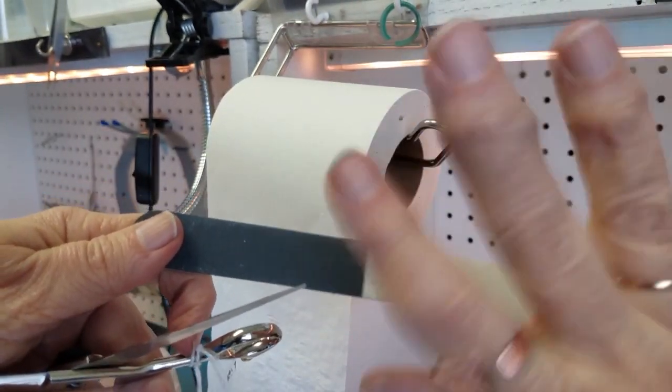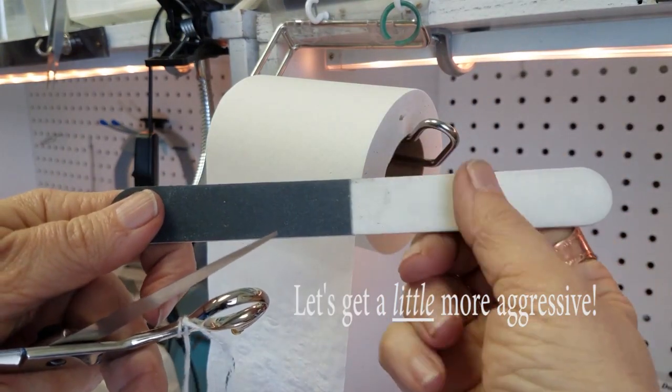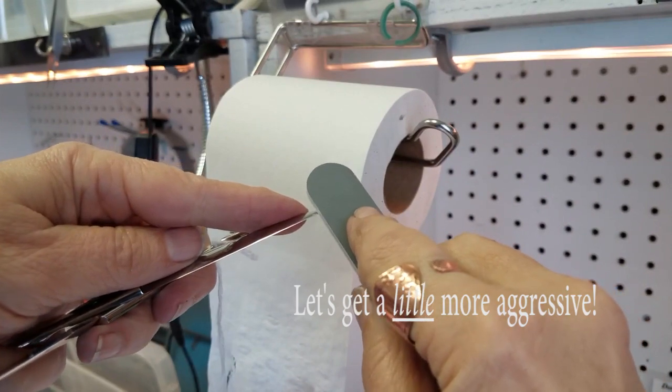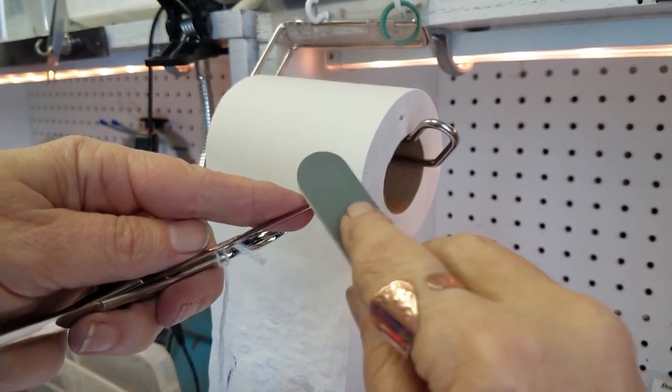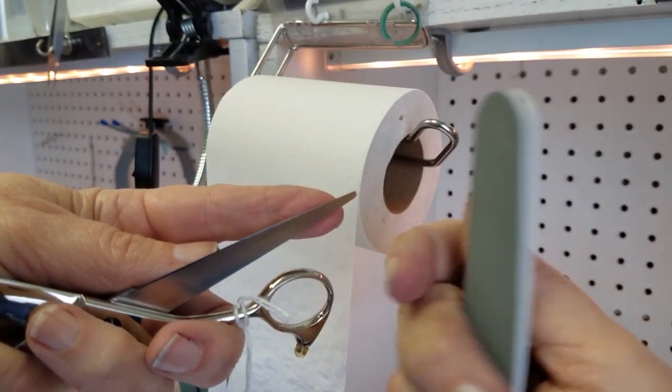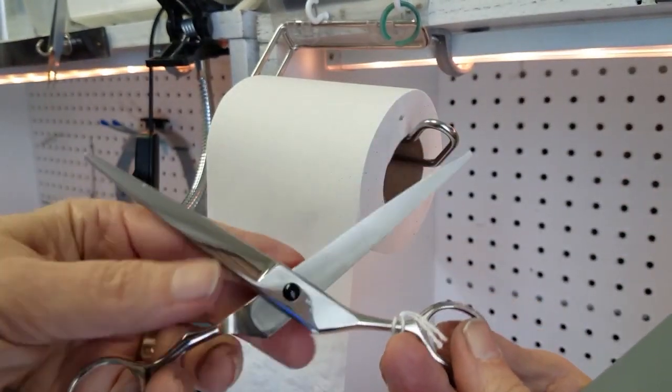That's my 3000 grit, but this time I'm going to turn it over. I'm not using the coarsest, but I'm using the next to the finest grit. I'm going to work just that tip where it's pulling.